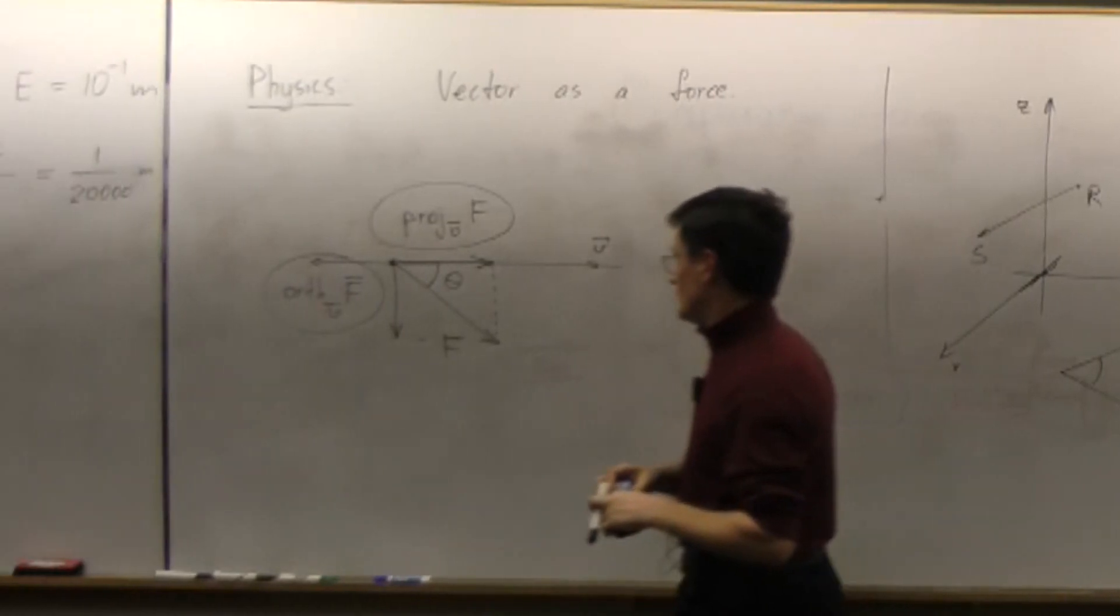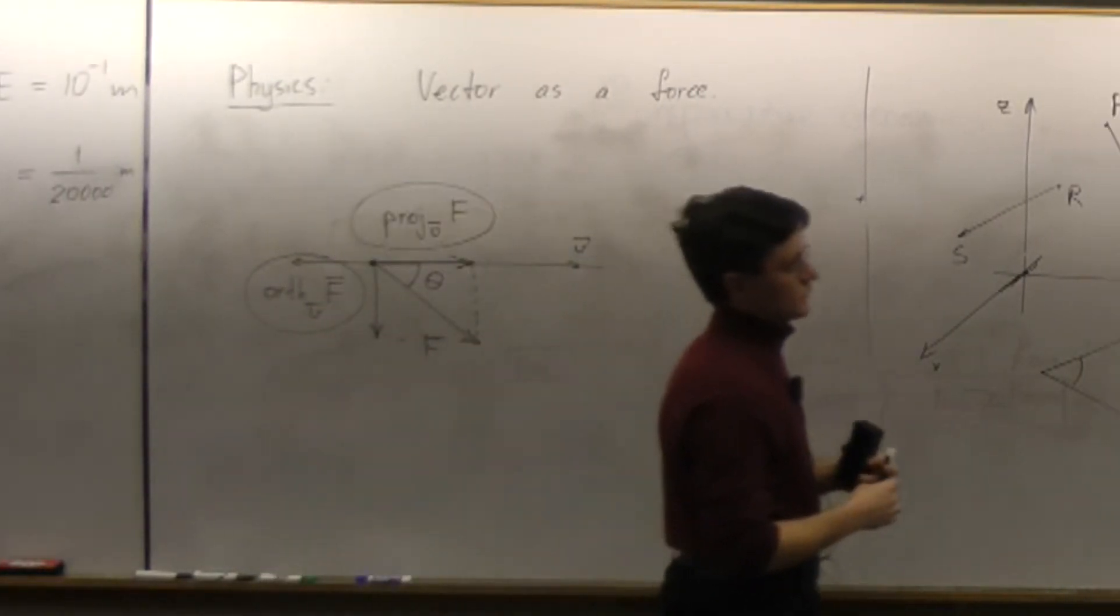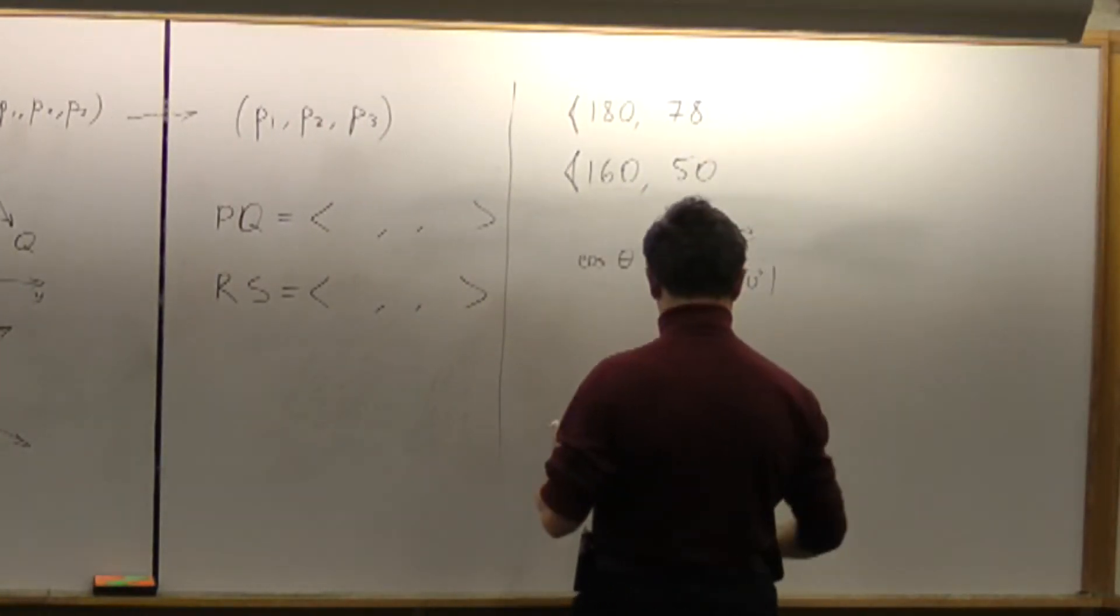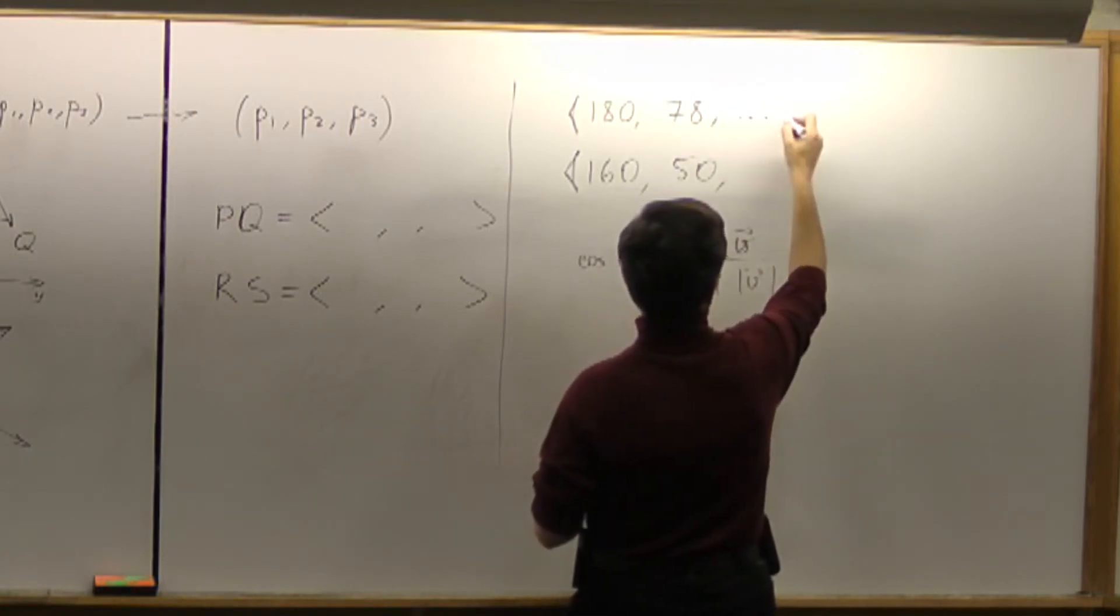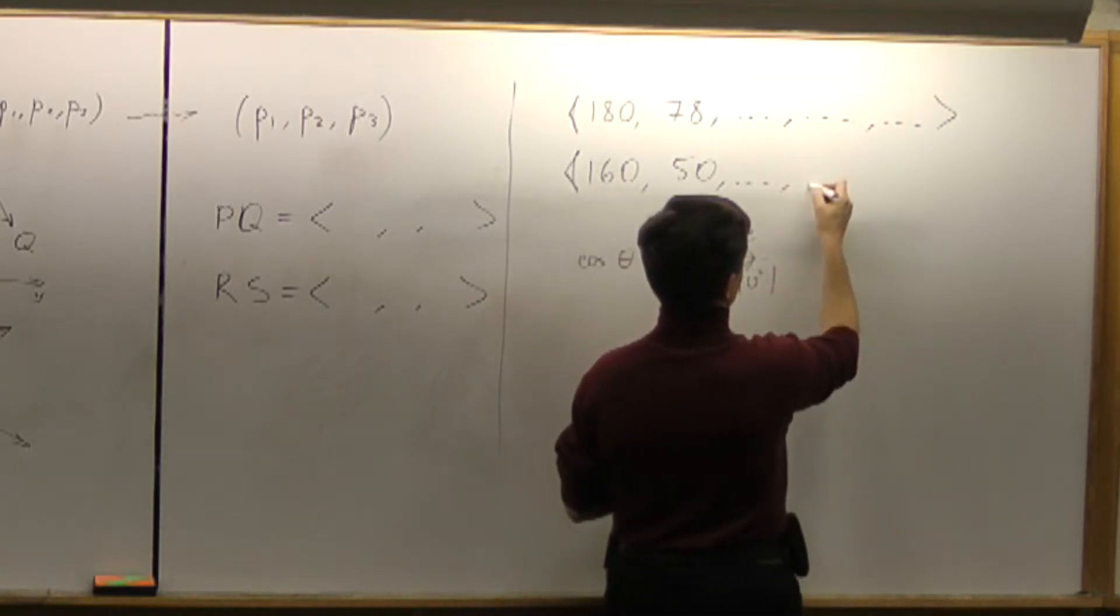And why do we need to go further? We will see later some examples. For example, if I wanted to measure something else and something else and something else about myself and about somebody else.